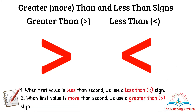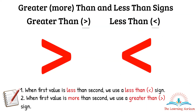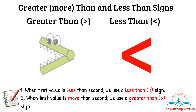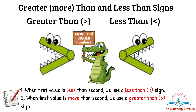Kids generally get confused while using these symbols. So before we move on with more examples, let us talk about one way we can help kids understand them. We can think of these symbols as alligator mouths. This alligator is hungry and likes to feed on more and bigger numbers, because when hungry we want to eat more.